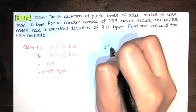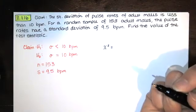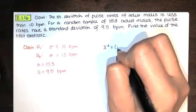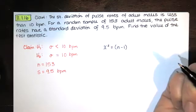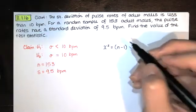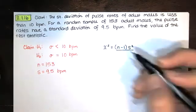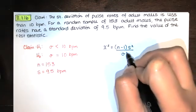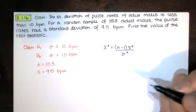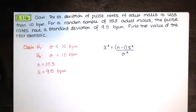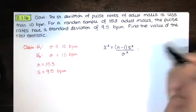So chi-squared is the test statistic that we use in this case. And it turns out to be the sample size minus 1, times that sample standard deviation squared, divided by the population standard deviation that we're testing against, squared.